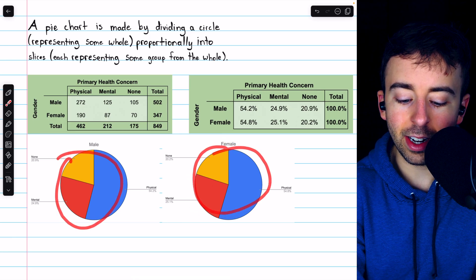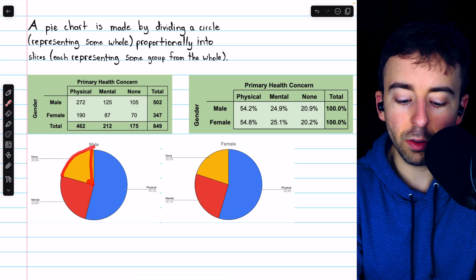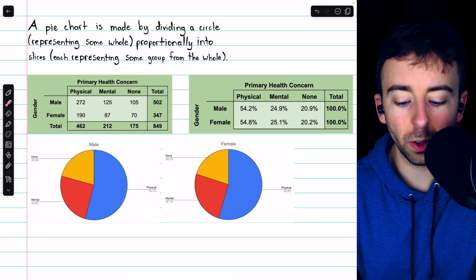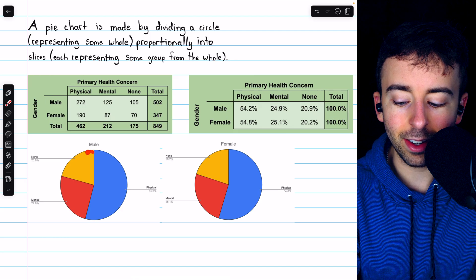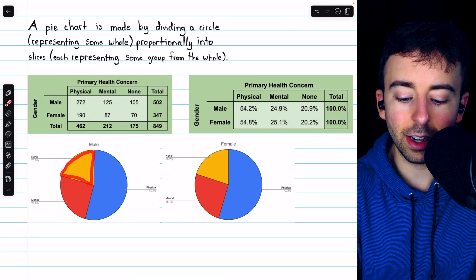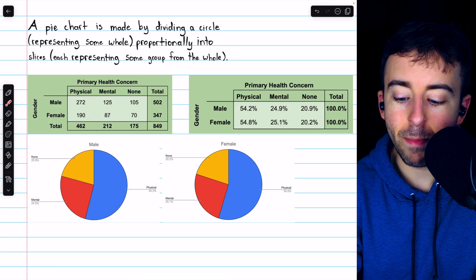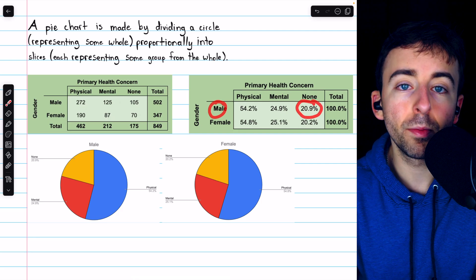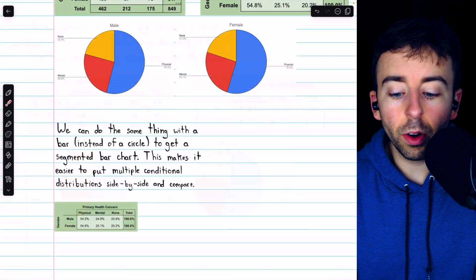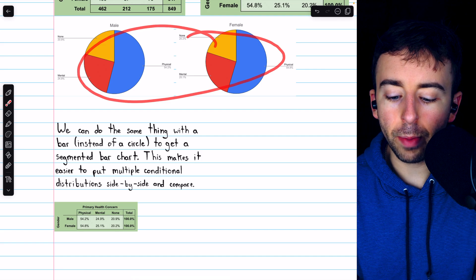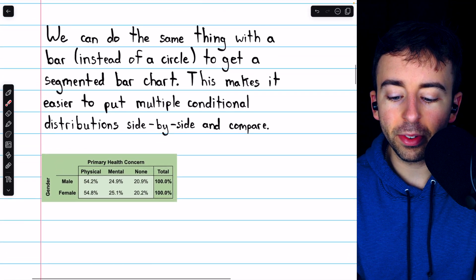Notice how each circle is divided into slices, which proportionally represent some group from the whole. For example, this slice is 20.9% of the whole circle. It represents the males who had no primary health concerns. Of course, we're not really here to talk about pie charts. We're here to talk about something else.